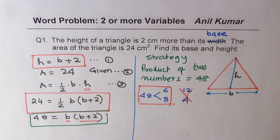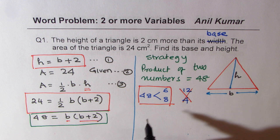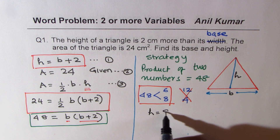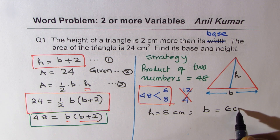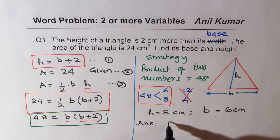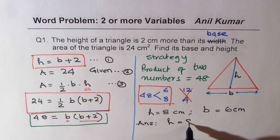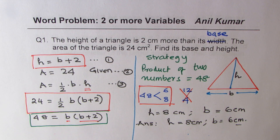Since we know height is more, height equals 8 centimeters and base equals 6 centimeters. We can write our answer as: height equals 8 centimeters and base equals 6 centimeters. Let's move on and try the next question.